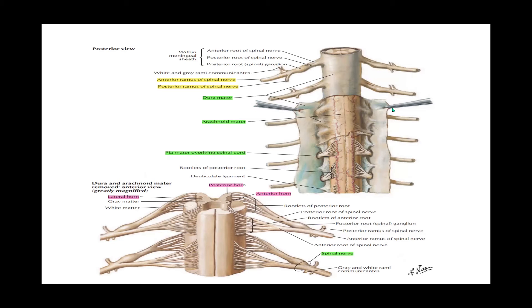This image demonstrates the meningeal covering of the spinal cord. Just like the brain, the spinal cord is covered by three layers of meninges: the dura, the arachnoid matter, and the pia matter. The spinal cord's dura has only one layer — the meningeal layer proper — unlike the brain's dura which has a periosteal and meningeal layer. If you peel off the dura you find the arachnoid, and beneath that is the pia, which is in direct contact with the spinal cord. Between the arachnoid and the pia is the subarachnoid space, which contains cerebrospinal fluid bathing the spinal cord and brain.